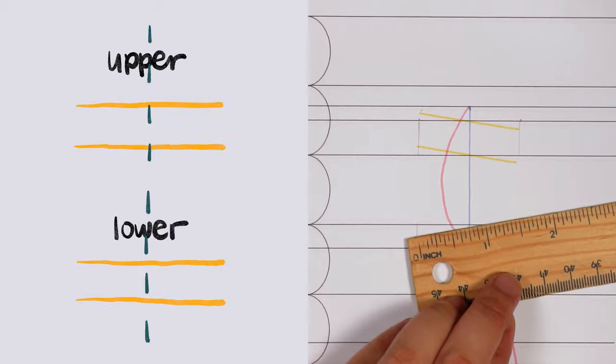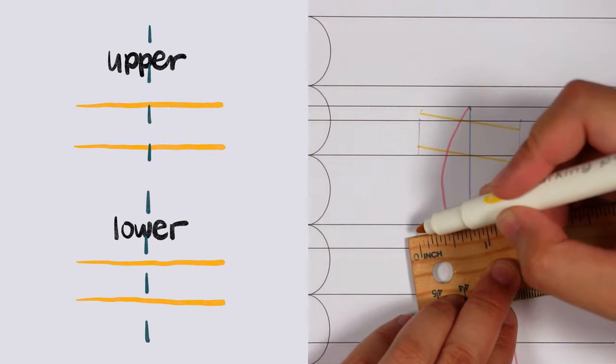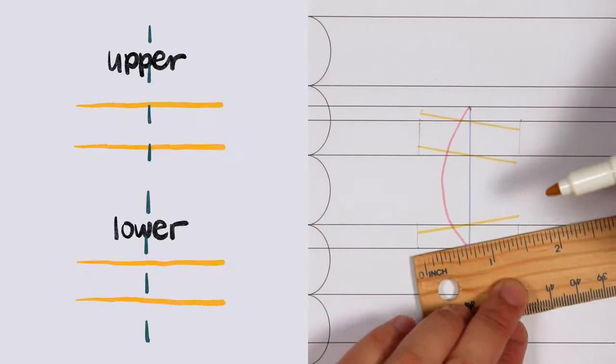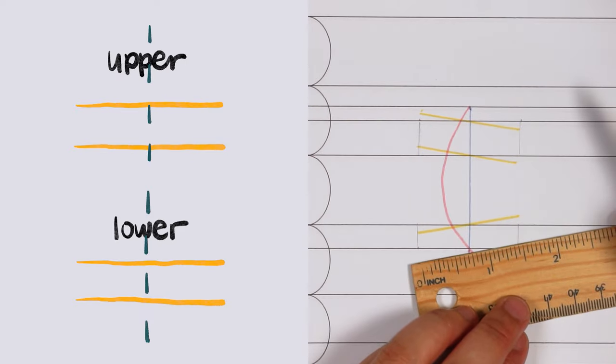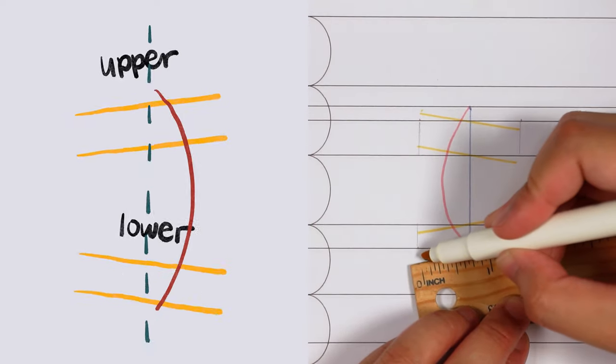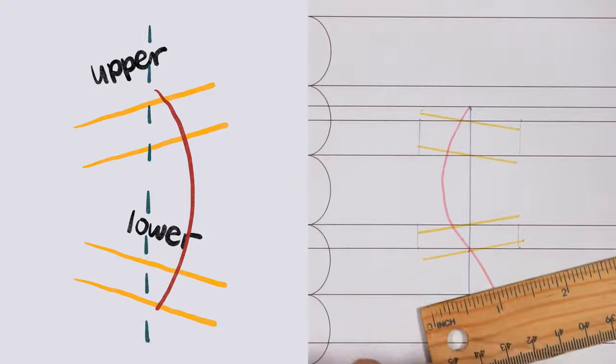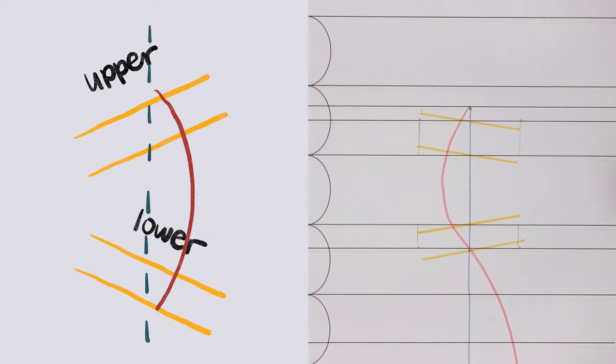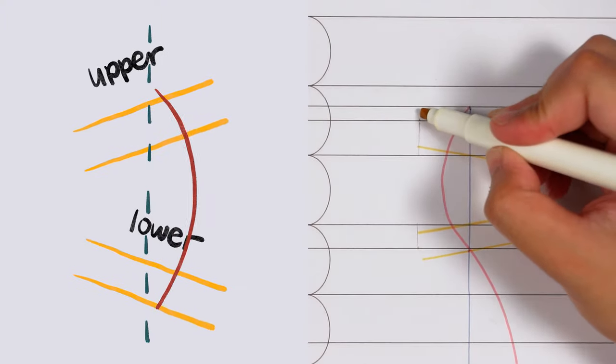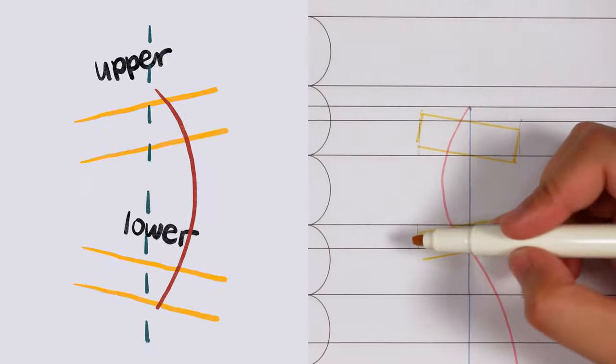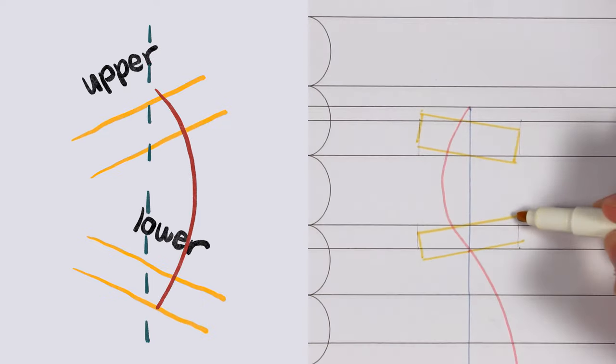So a good way to remember this is the side of the torso that the s-curve is located on is the side where the torso extends. So if the s-curve is located on the right side of the torso, then the torso extends on the right side as well.